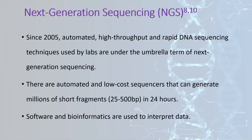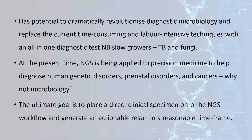Since 2005, the automated high-throughput and rapid DNA sequencing techniques used by labs fall under the umbrella term of next-generation sequencing. These are automated, low-cost sequencers that can generate millions of short fragments in 24 hours, but software and bioinformatics are used to interpret the data. NGS has the potential to dramatically revolutionize microbiology, especially for time-consuming, labor-intensive techniques, and to create an all-in-one diagnostic test — which is really important for slow growers such as TB, which can take 56 days to grow in conventional culture. At present, NGS is being applied to precision medicine to help diagnose human genetic disorders, prenatal disorders, and cancers.